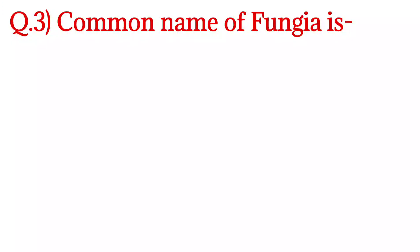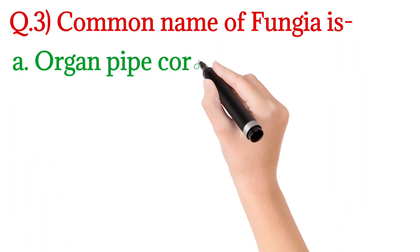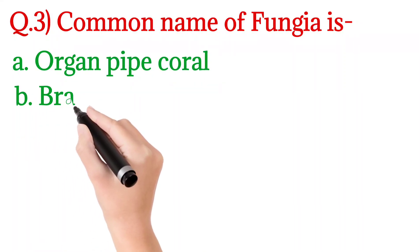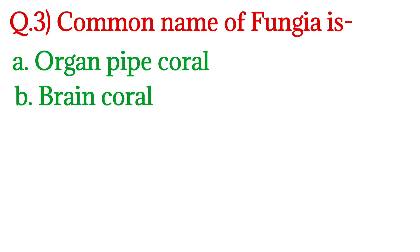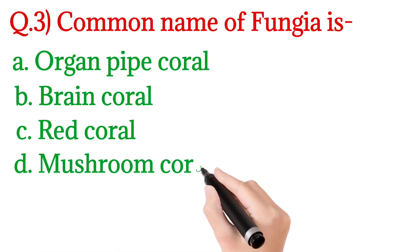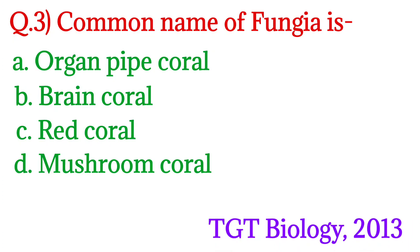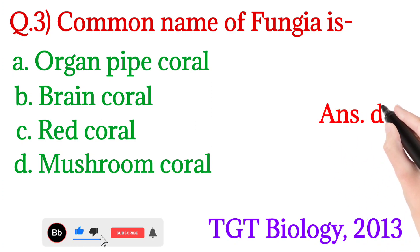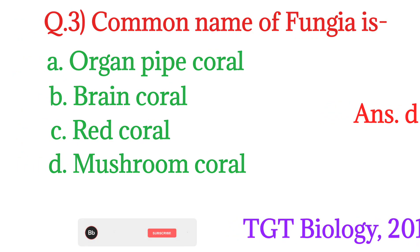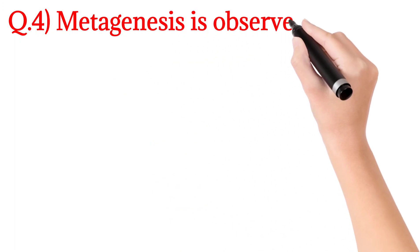Next question number 3: Common name of Fungia is — Fungia का साधारण नाम है। Option A is Organ Pipe Coral, Option B is Brain Coral, Option C is Red Coral, and Option D is Mushroom Coral. यह question PGT Biology 2013 में पूछा गया था। इसका answer होगा Option number D — Mushroom Coral. Fungia को Mushroom Coral भी कहा जाता है।